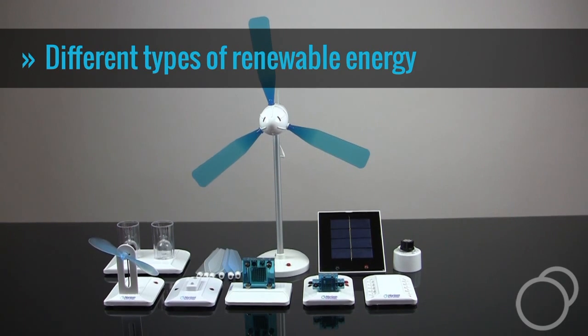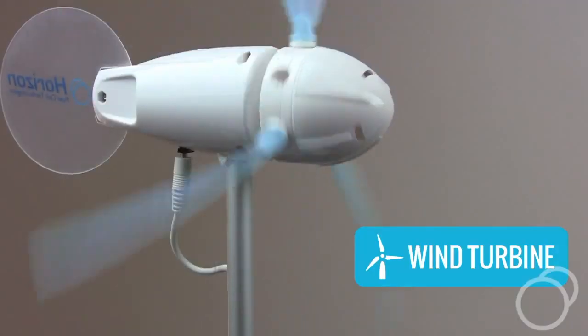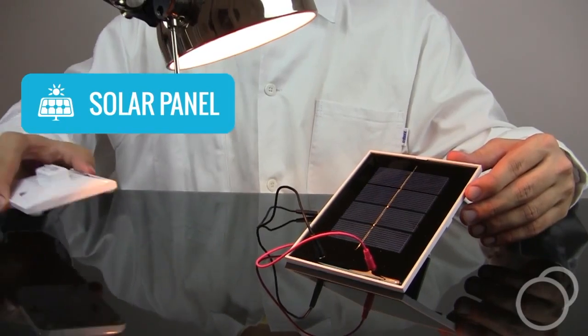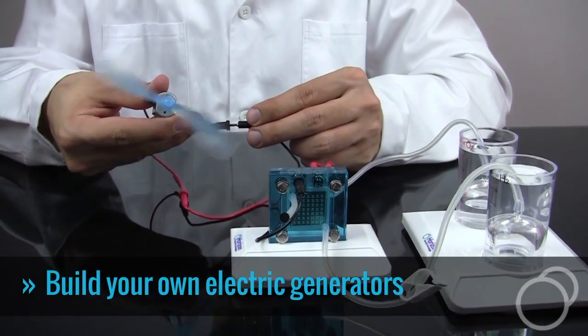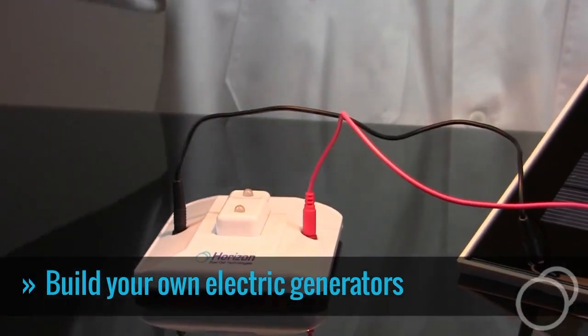The Renewable Energy Education Kit can generate electricity using a wind turbine, solar panel, or one of two hydrogen fuel cells. The electric current can be used to power a small fan or light up LEDs.